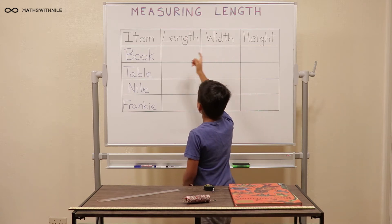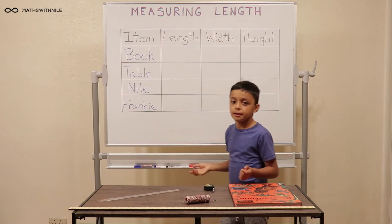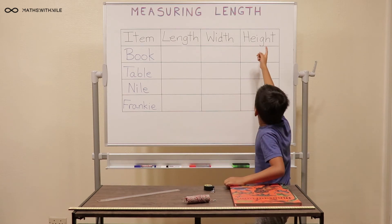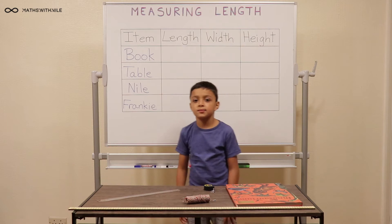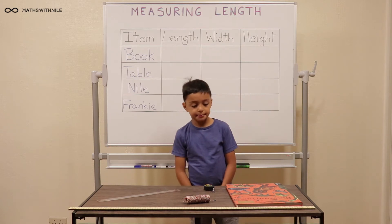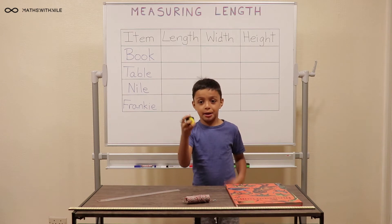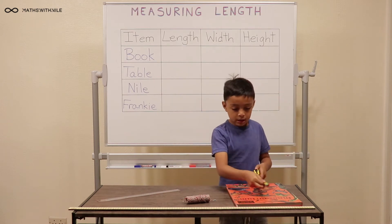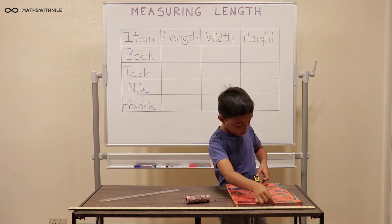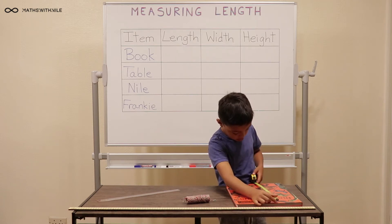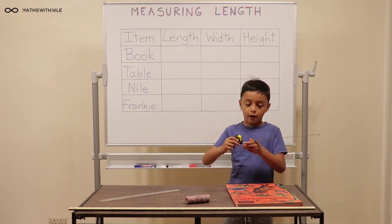Length and then width and then height. And what is the length? The length is how long it is. The width is how wide it is. And height — the height is how tall it is. So we'll use the thickness for the height of the book today. What are you going to use to measure the length of the book? I'm going to be using this. And when you're measuring, what number do you always start from? Zero. So the book is 37.5 cm long.